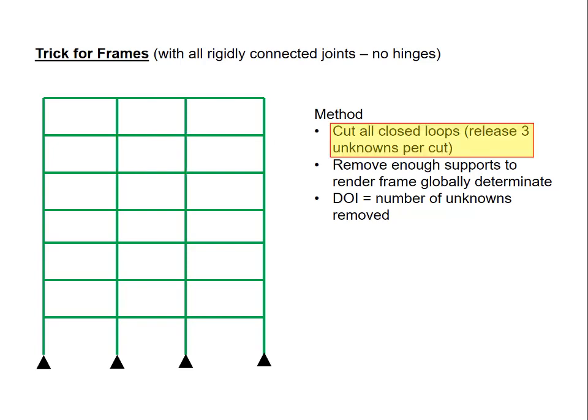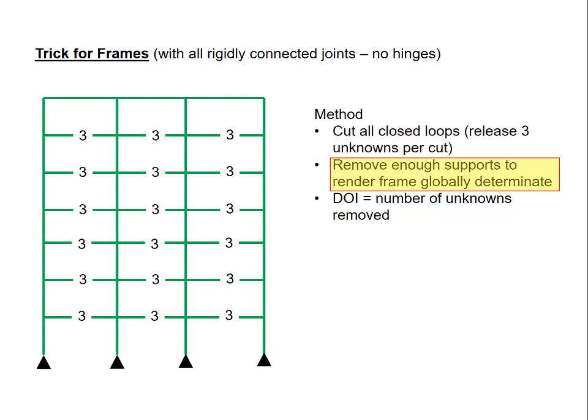Let's start by looking at the first step. I'm showing here all the locations where I would cut and I'm showing the number of releases at each cut. So at each location that I've cut, there's the number three. That's because at each location, I have released an axial force, I've released a shear force, and I've released a bending moment. Next, I'll remove enough supports to render the frame globally determinate. Let me start by removing three of the pins.